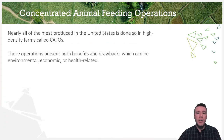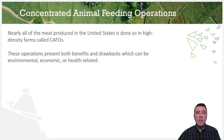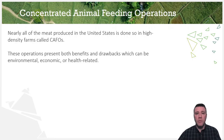Meat production in the U.S. and around the world has become increasingly dominated by these types of animal farms. For example, in the 1960s, it took about a million farms to house the country's 57 million pigs. But only 40 years later, there were only 80,000 farms that housed the same number of pigs.